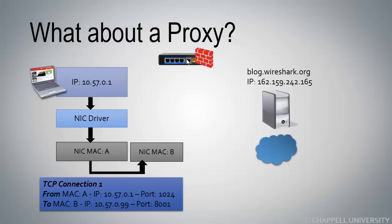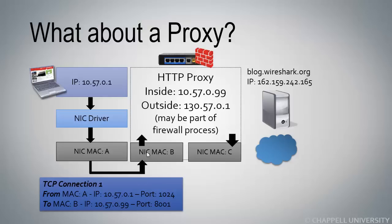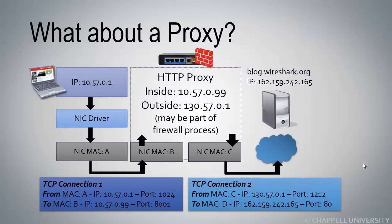Once the request comes in, the HTTP proxy box understands that you're talking directly to it using its internal IP address. But when it sets up the proxy connection, it will use an outside address. So when we look at a packet on the other side of the proxy box — TCP connection number two — it comes from the proxy box MAC address to the MAC address of the next router along the path. The IP addressing comes from the proxy box's external IP address and a dynamic port number, going to the IP address of the target, blog.wireshark.org, on port 80.